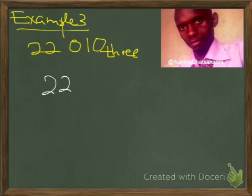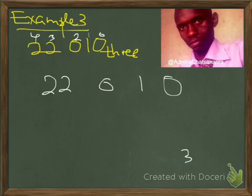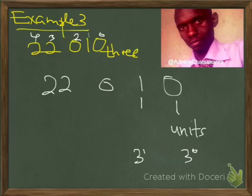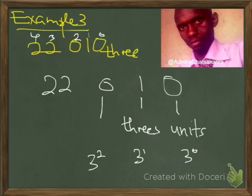Let's look at another example: 222010 in base 3. We want to locate and name the values of the digits. This is position 0, 1, 2, 3, and 4. 3 to the power 0 equals 1, so 0 stands for unity. 3 to the power 1 means these are 3s. The position of 0 is 3 to the power 2; 3 times 3 equals 9, so these are 9s.